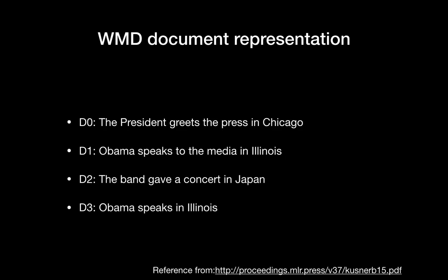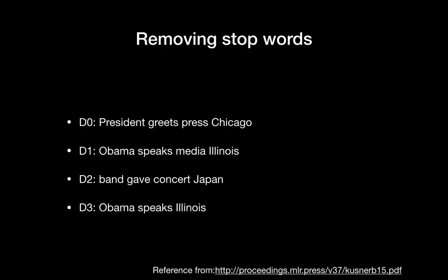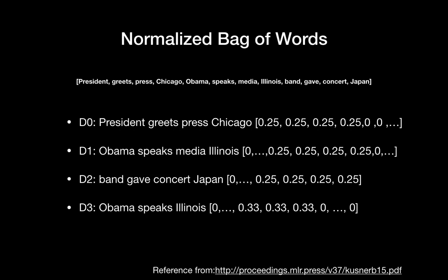WMD uses the normalized bag of words after stop words removal. Here is an example with four documents. The first one is 'The president greets the press in Chicago'. The second is 'Obama speaks to the media in Illinois'. The third is 'The band gave a concert in Japan'. And the last one is 'Obama speaks in Illinois'. This example and the slides are from a real research paper as shown at the bottom of the page. The first step is to remove stop words. After removing them, we normalize the bag of words. For example, in document 1 — 'president greets press Chicago' — you have four words, and there is just one 'president', so one over four is 0.25. 'Greets' is also 0.25, and so on.